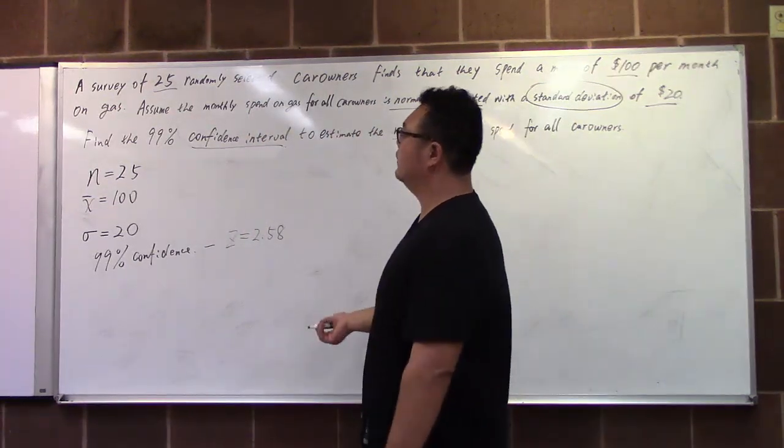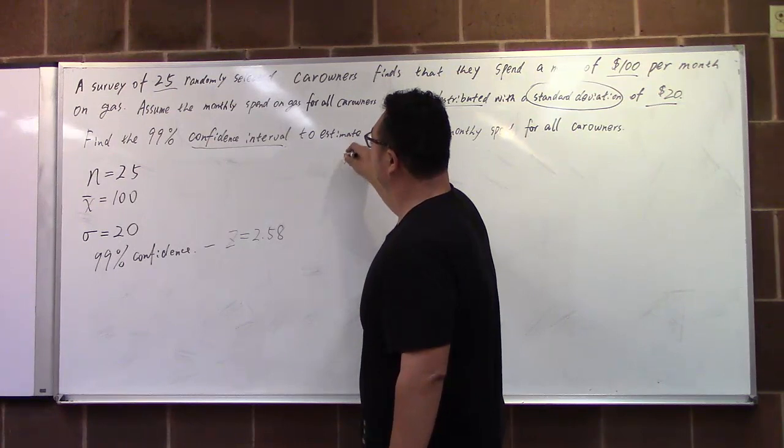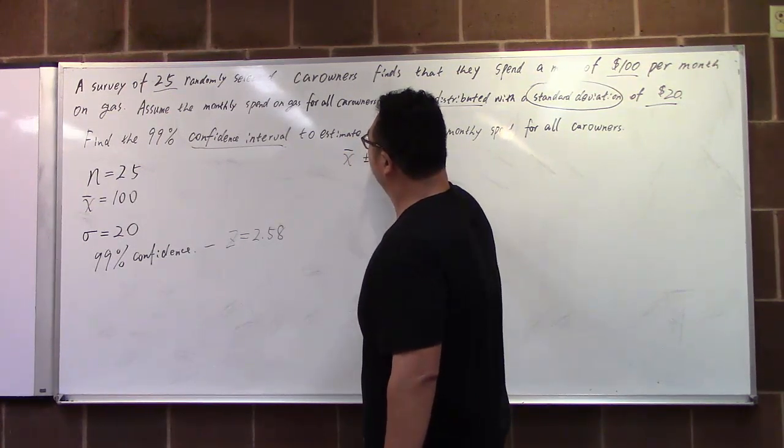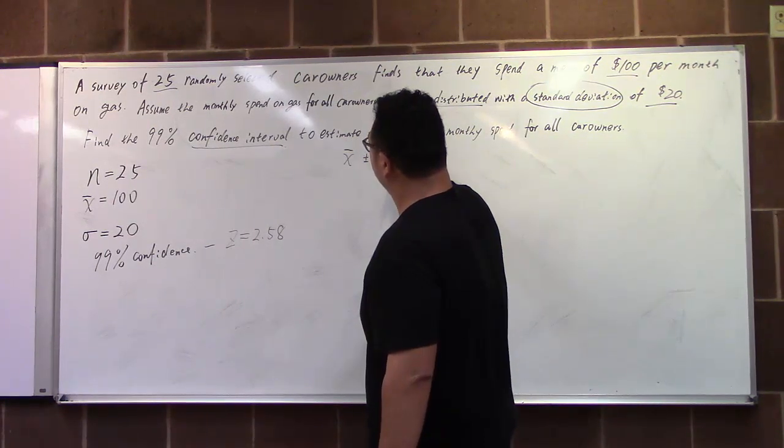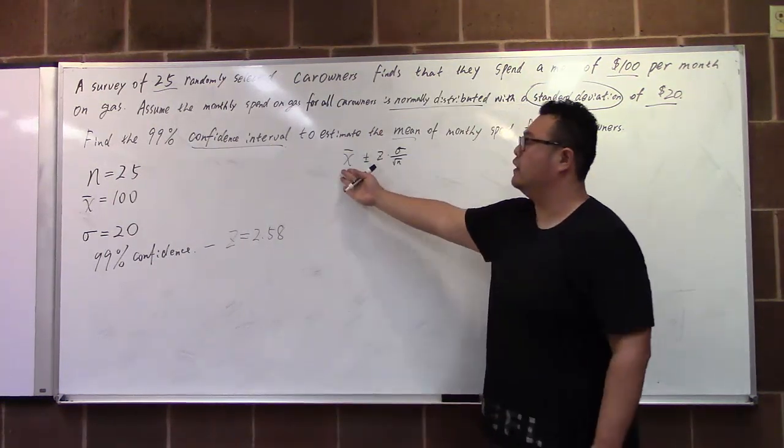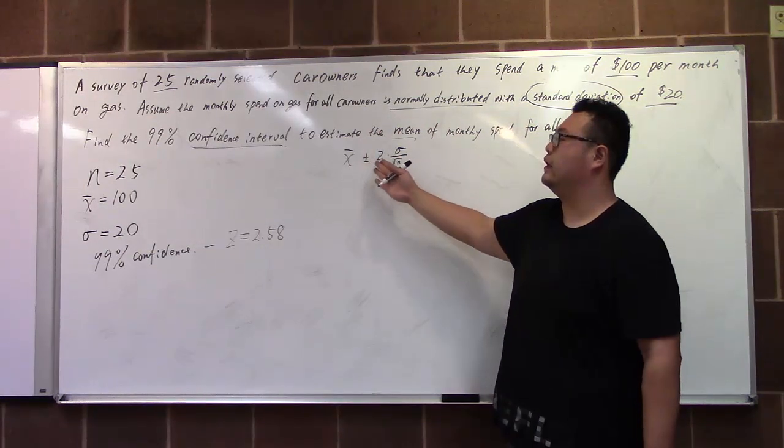And the formula of confidence interval is the point estimate plus minus the margin of error.